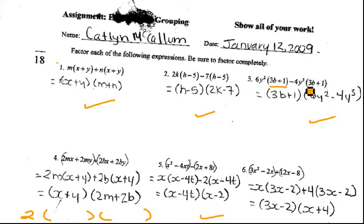These are all set up. So as soon as you see 3b plus 1 and 3b plus 1, you pull it out, and you're left with 6y squared minus 4y cubed. So that's all good.